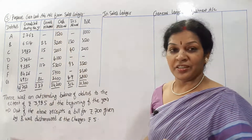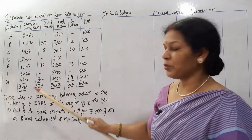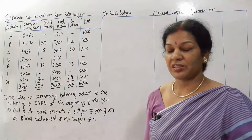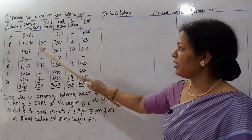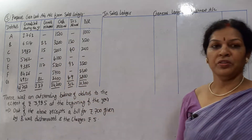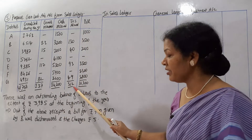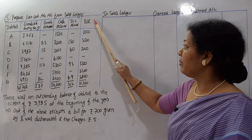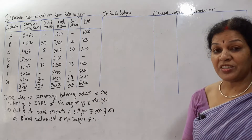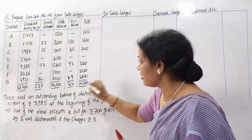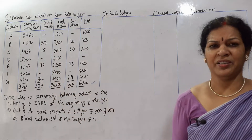Next, goods returned — sales returns: total 237. Cash received from debtors: total 24,200. Discount allowed to a few debtors: total 312 rupees. Bills receivable: total 16,300. We only need these final totals — we do not take each individual debtor's figure.